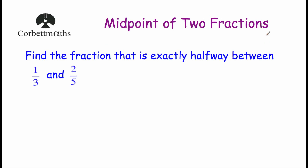To find the midpoint of two fractions, what we do is add the two fractions together and divide by two. This is the same as finding the midpoint of two numbers — you add two numbers together and divide by two, and it tells you the number that's exactly halfway between them.